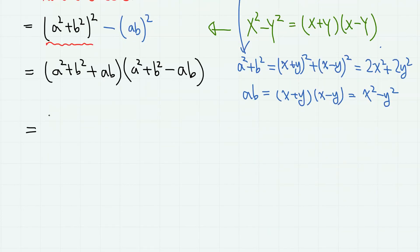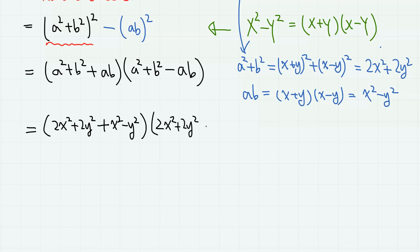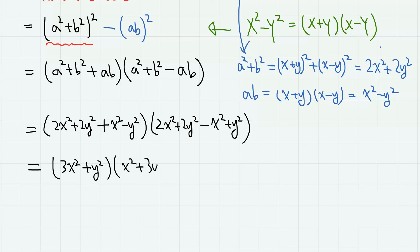Therefore, we have (2x squared plus 2y squared plus x squared minus y squared) times (2x squared plus 2y squared minus x squared plus y squared). So we have (3x squared plus y squared) times (x squared plus 3y squared).